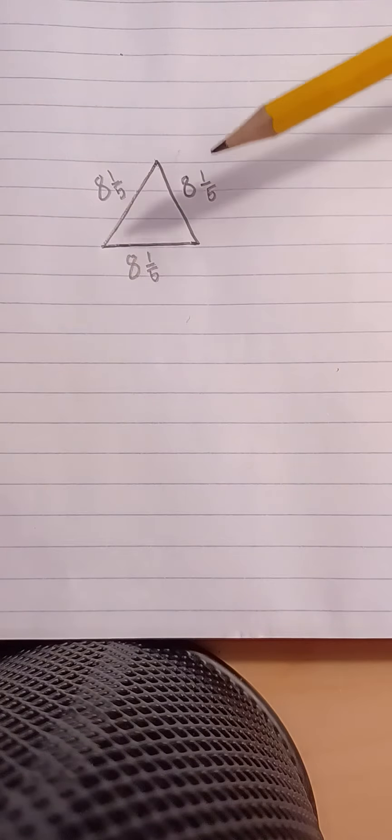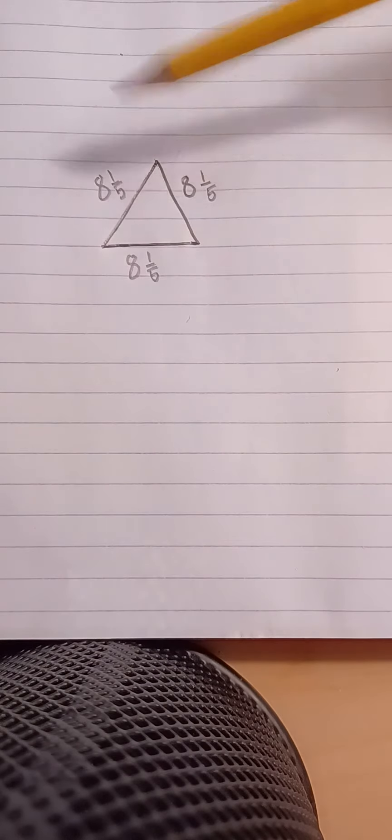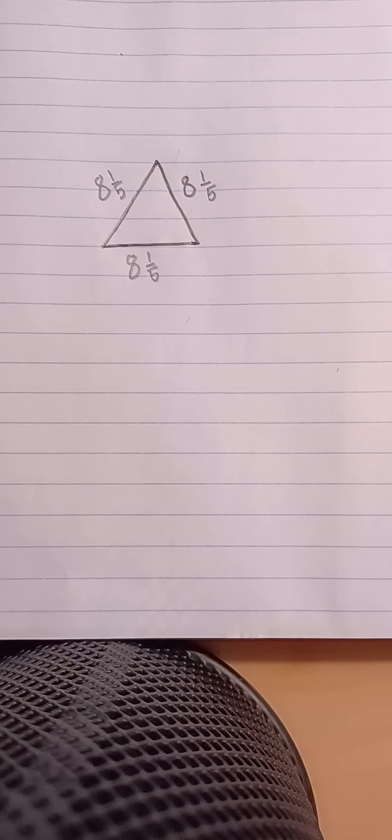Then what you're going to do is you're going to see 8 and 1 fifth, 8 and 1 fifth, 8 and 1 fifth. Now, if the outside, if everything is 8 and 1 fifth, what would the whole figure be?